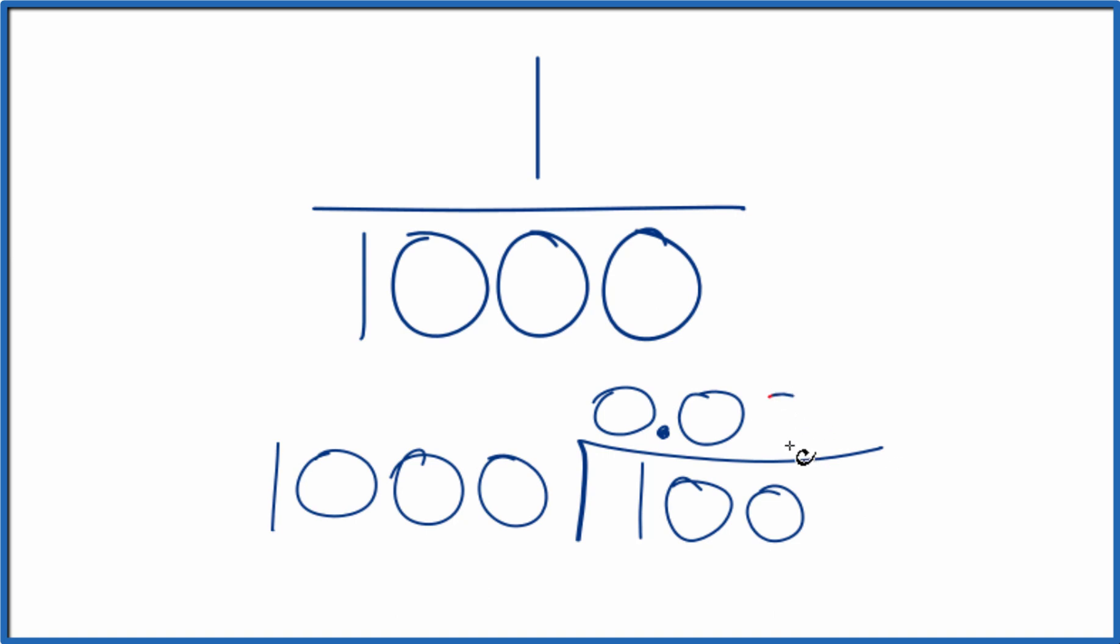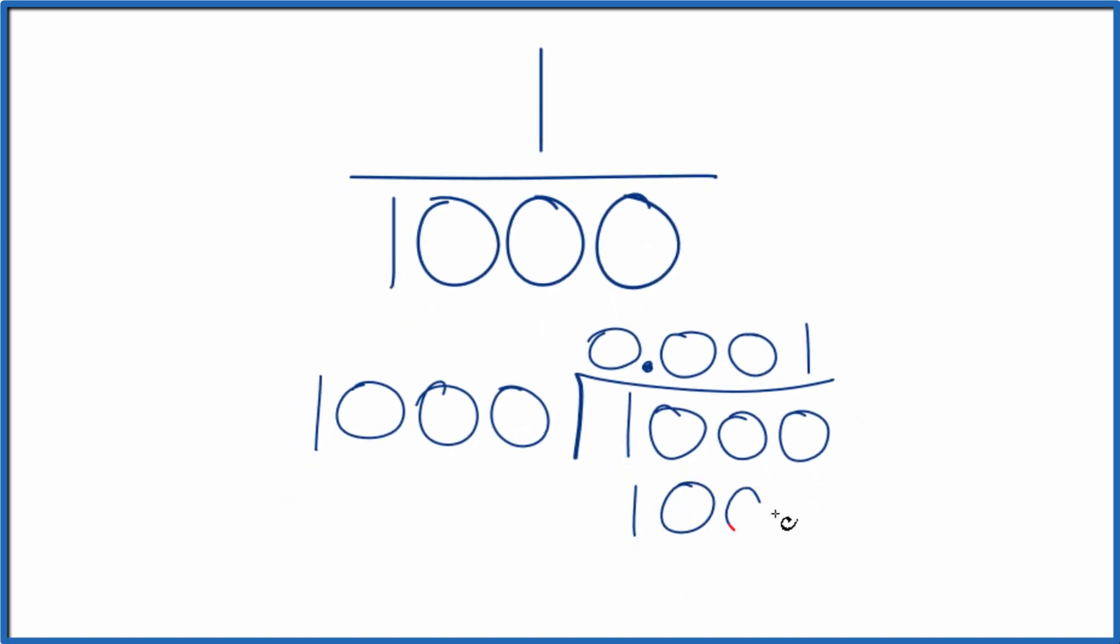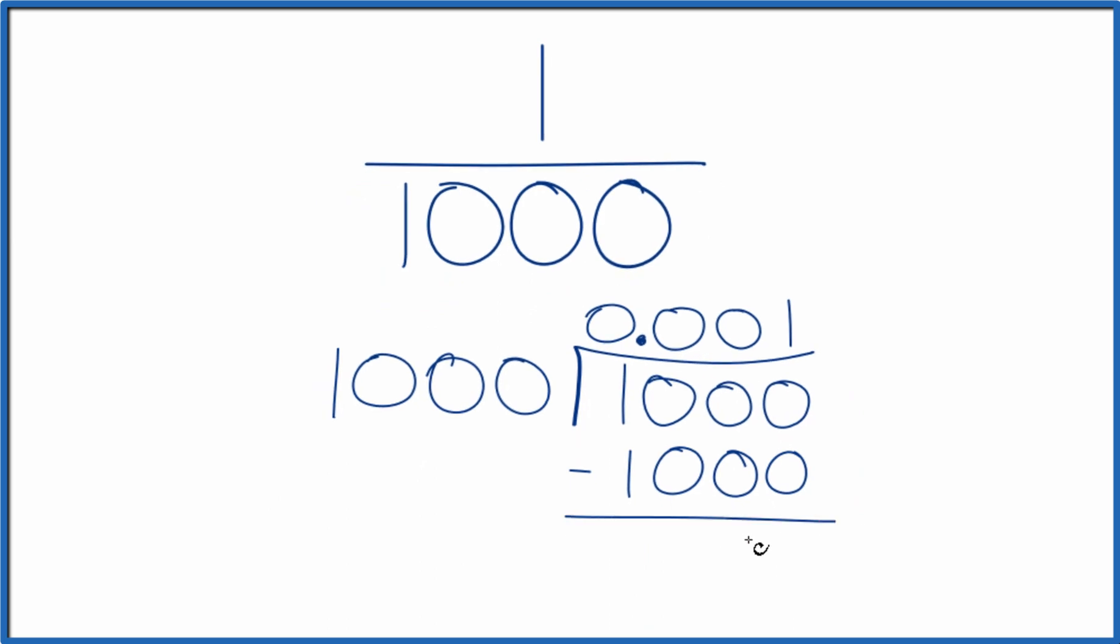It doesn't go into 100. One more 0 here. Add our 0 here. So now 1,000 divided by 1,000. 1 times 1,000, that's 1,000. And now when we subtract, we don't have any remainder.